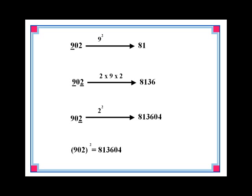You may have noticed that in the last step when we squared 2 while obtaining the square of 902, we did not just write 4 but the numbers 0, 4, and that is a very salient point. Each step in this method must contribute two digits to the result.